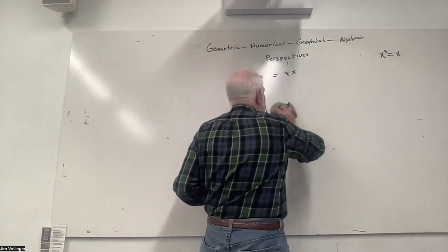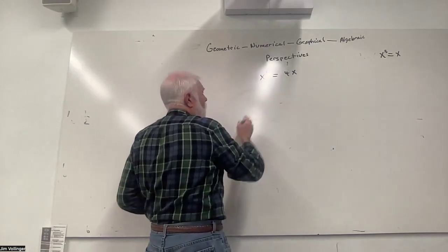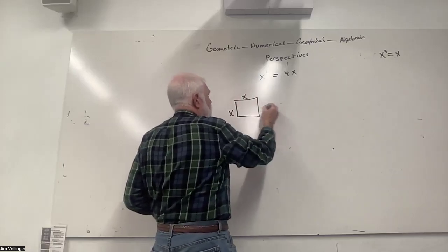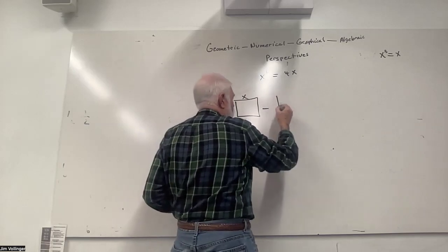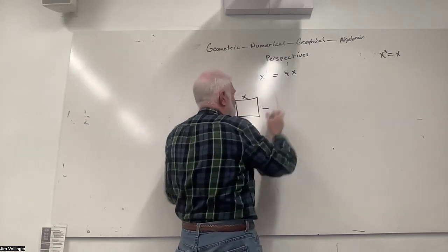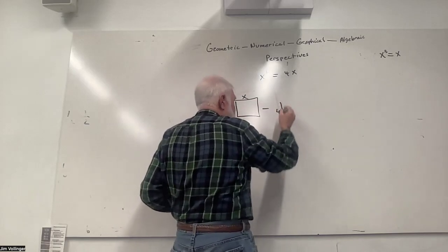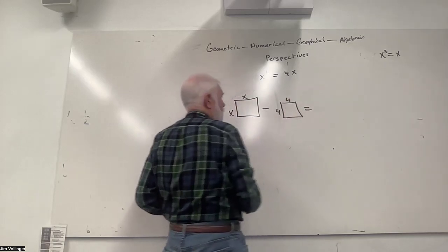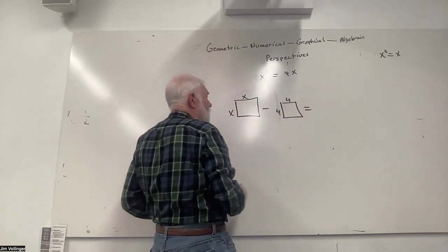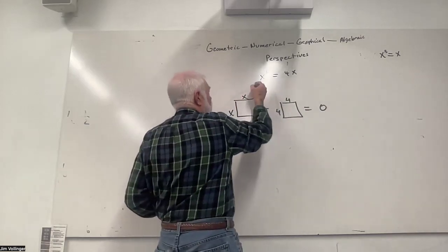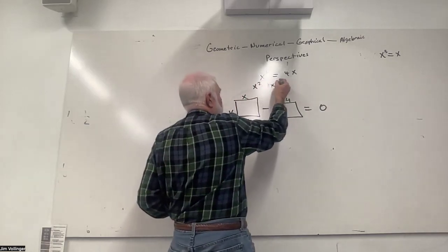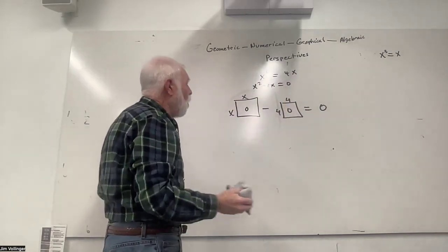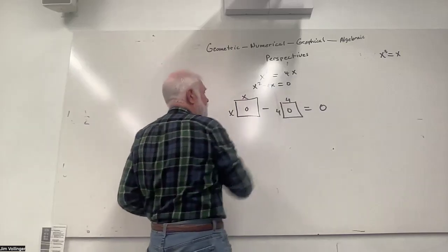Somebody probably looked at this and said: what if we bring that square to this side? What if we have x squared on this side and we're subtracting four times x? Well, if you bring that to this side you've got x squared minus 4x equals zero — so there's no area.